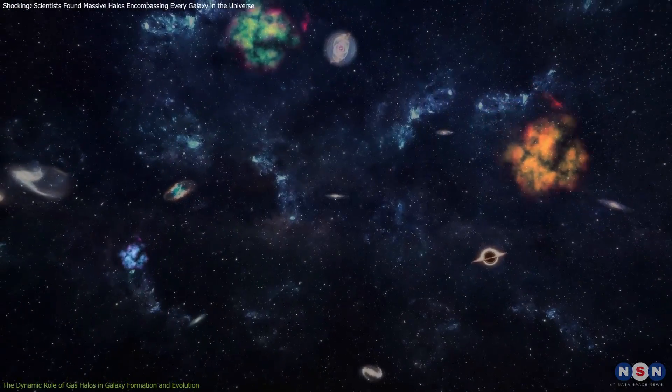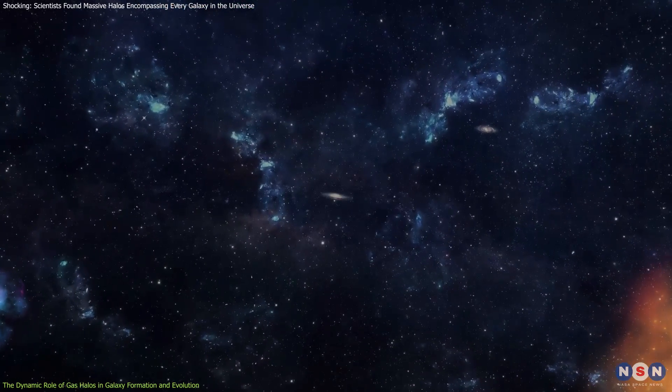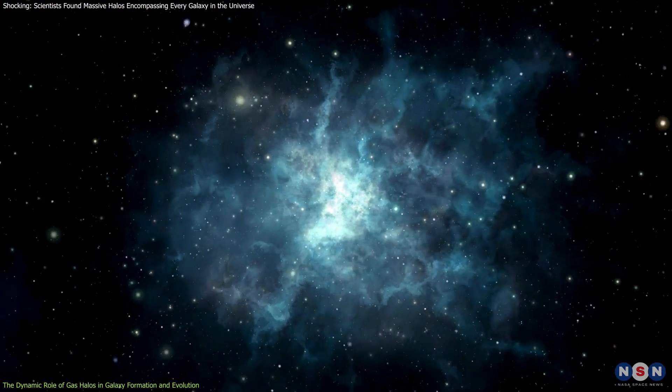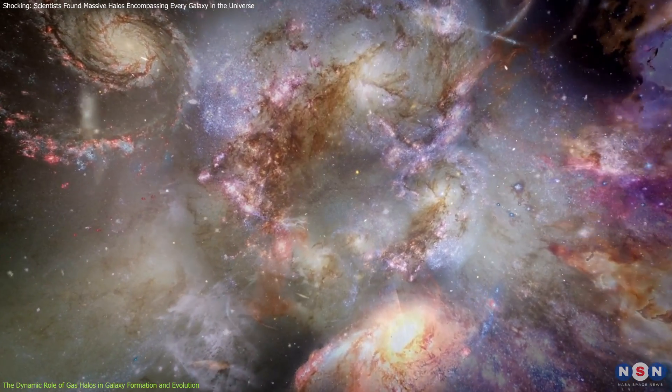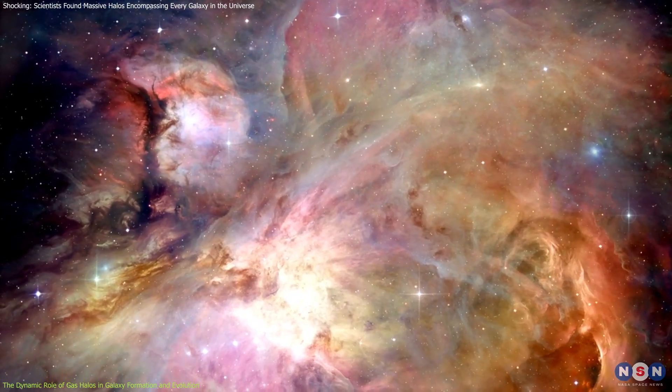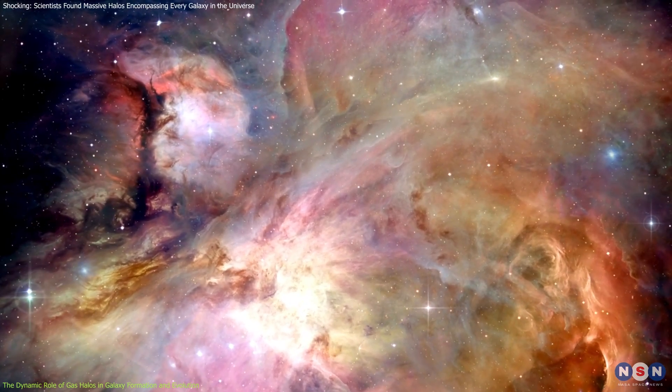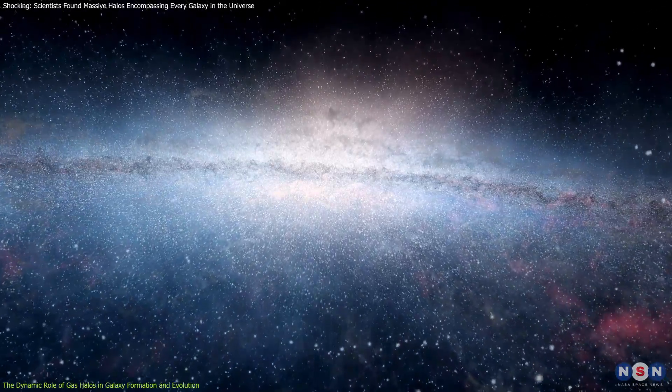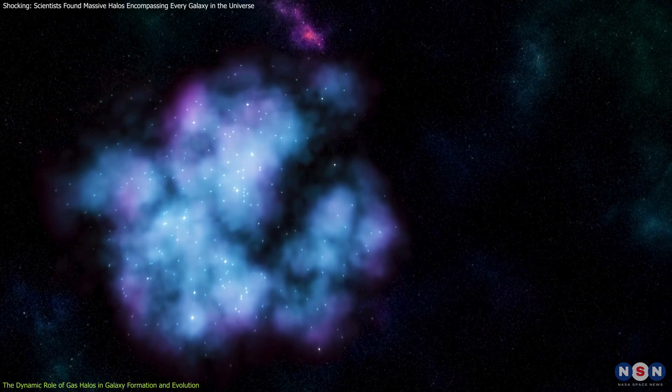While visualizing these gas halos is a significant achievement, many questions remain, particularly about why these halos glow and what governs their interactions and properties. Unlike the dense regions within galaxies, where the glow of hydrogen gas is typically caused by strong radiation from nearby stars, the vast expanses of a halo lack sufficient stellar radiation to account for their faint light. So, what makes these halos emit light?